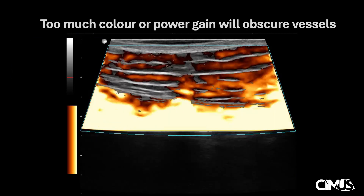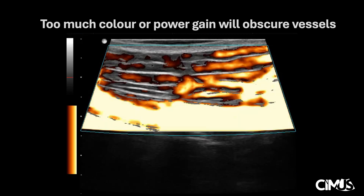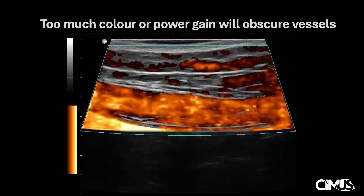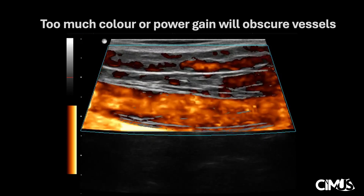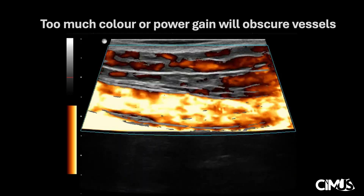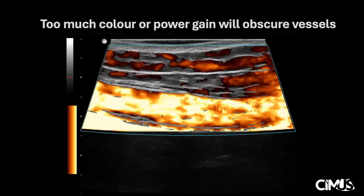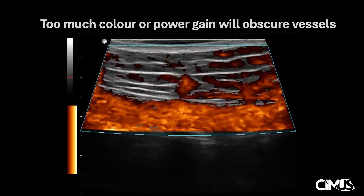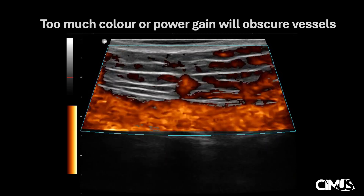Conversely, while too low of gain can miss vessels, having too much color or power gain is also problematic and will obscure vessels. A similar appearance may also occur if there is too much movement, so it's important to hold the transducer still.